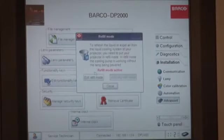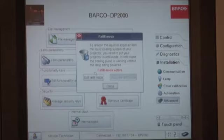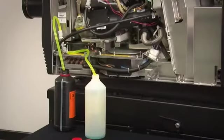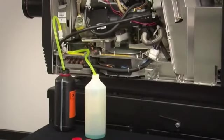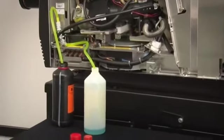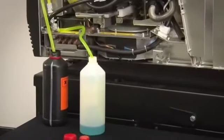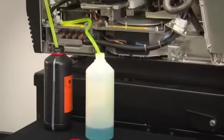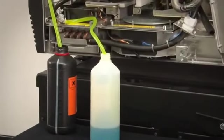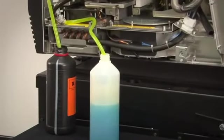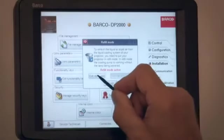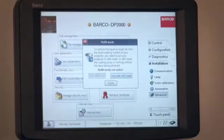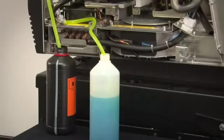When you press the activate refill mode button, fluid will transfer quickly. The pump will empty all the fluid from the full bottle in about 10 seconds and eject all the old internal cooling fluid into the empty bottle. Carefully watch the supply bottle. When the fluid is just about empty, press exit refill mode to stop the pump immediately. You now have new cooling fluid inside the projector and the old cooling fluid in the exit bottle.